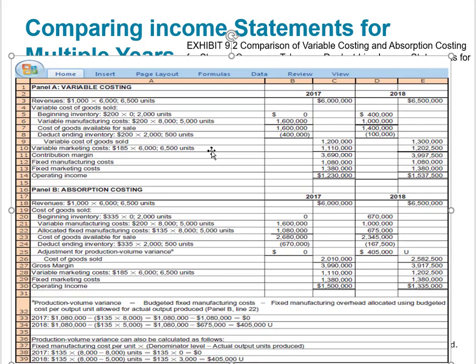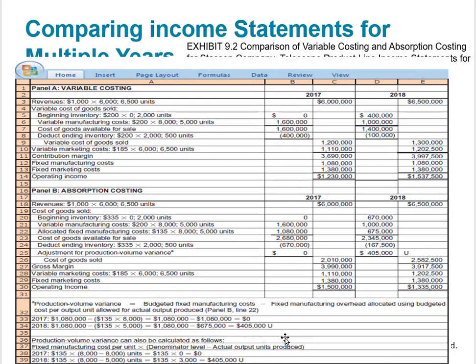Here we have two years of income statements under each system — panel A shows variable costing on top, and absorption costing on the bottom. The values are the same as in the previous slide. In 2018, the fixed cost rate of $135 is based on a budgeted capacity level of 8,000 units. In 2018, production was only 5,000, creating a production volume variance of $135 times 3,000, or $405,000. Under variable costing, fixed costs are expensed as incurred, and no production volume variance exists.